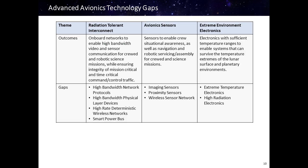In the area of radiation tolerant interconnect, we need onboard networks to enable high bandwidth video and sensor communication for crewed and robotic science missions. Beyond high bandwidth, we also need to ensure the integrity of mission critical and time critical command and control traffic. For this, we're looking for high bandwidth network protocols and physical layer devices, high rate deterministic wireless networks, and smart power buses.